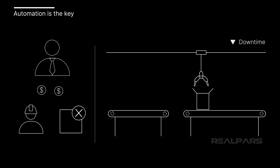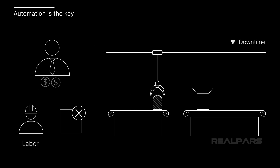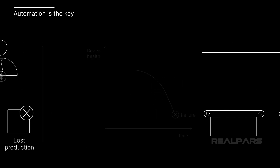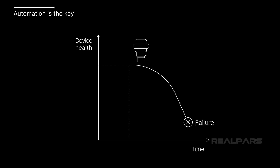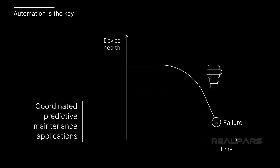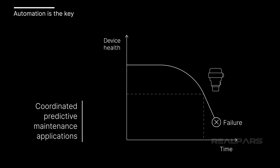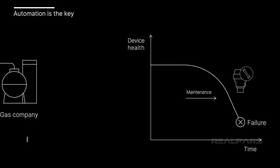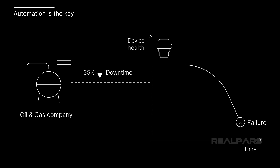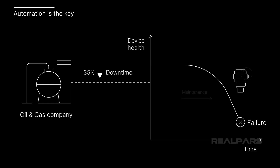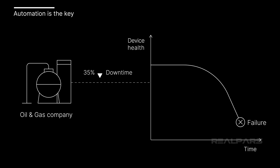Automated systems help to minimize downtime. Downtime is a cost to the manufacturer both in labor and lost production. Automation tools such as condition-based monitoring help ensure factories run efficiently by eliminating costly equipment failures that cause downtime. A recent study by GE showed that companies in the oil and gas sector using modern predictive maintenance tools have reported up to 35% reduction in unplanned downtime.